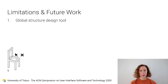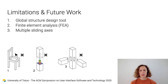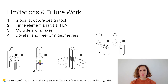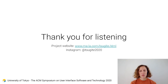As for limitations and future work, Tsugite focuses on joint design only; integrating the design of a whole structure would be a helpful future direction. We also leave to future work more thorough structural analysis such as FEA without compromising calculation times. Furthermore, it is not possible to create three-or-more timber joints with multiple sliding axes. Due to the voxelized design space, shapes like a dovetail or freeform curve cannot be made. The system is designed for frame structures and does not fully extend to plate-to-plate connections. Thank you for listening — please read the paper for more results and technical details.